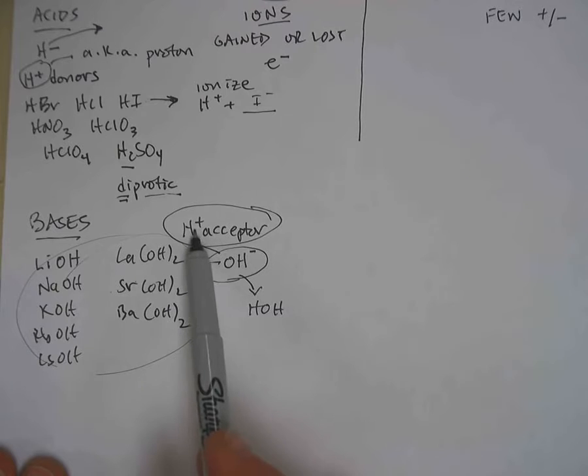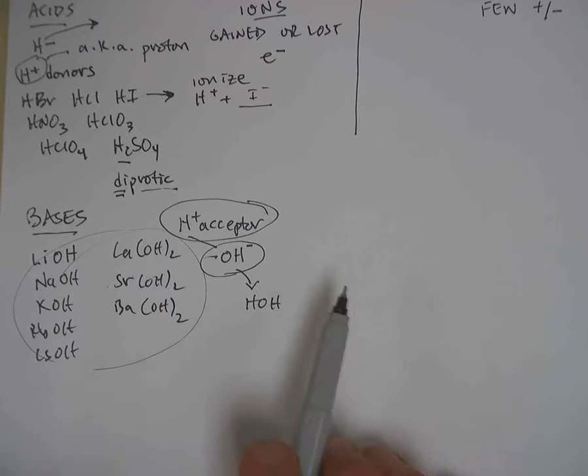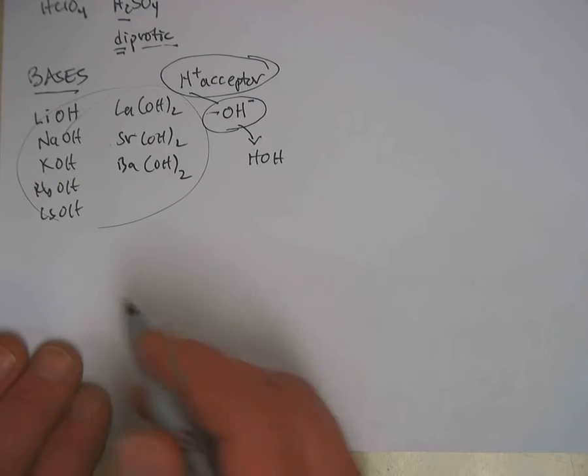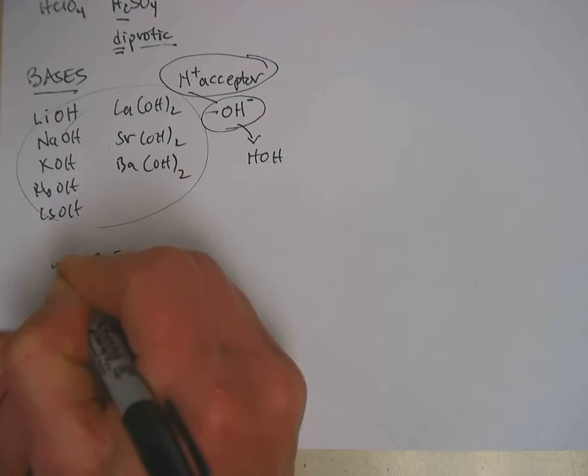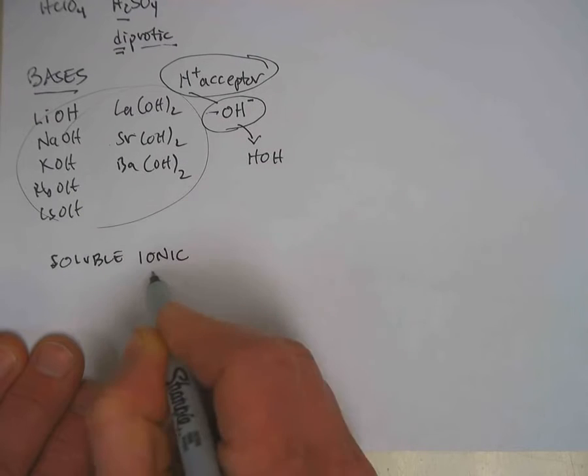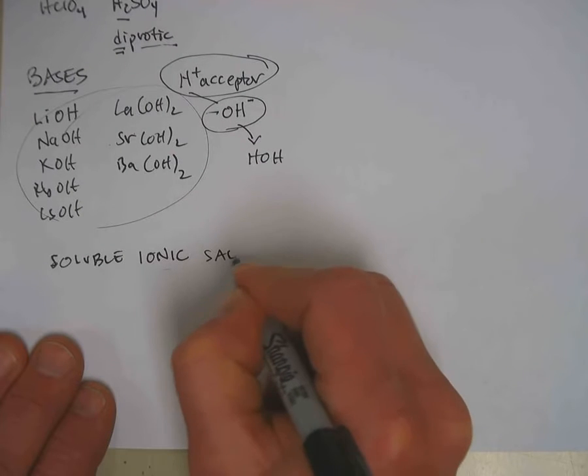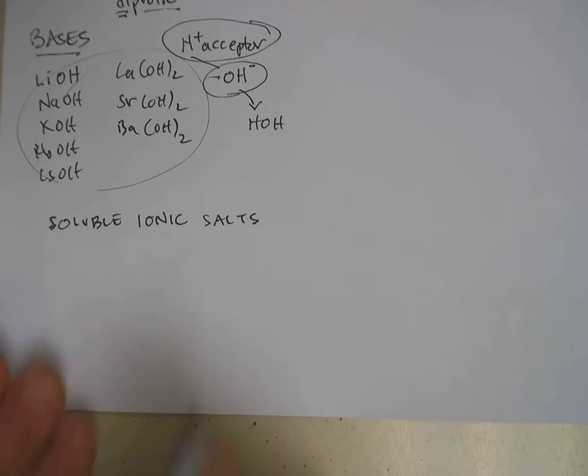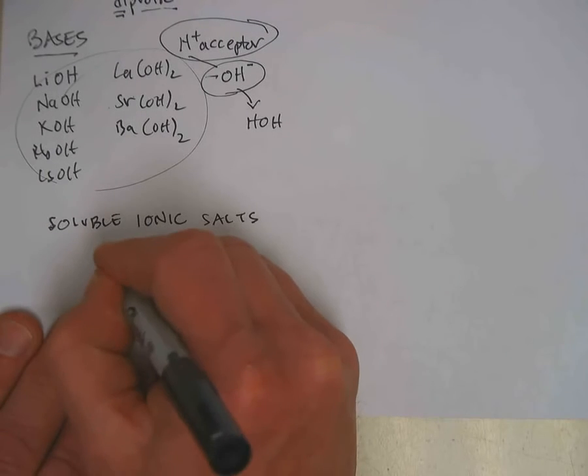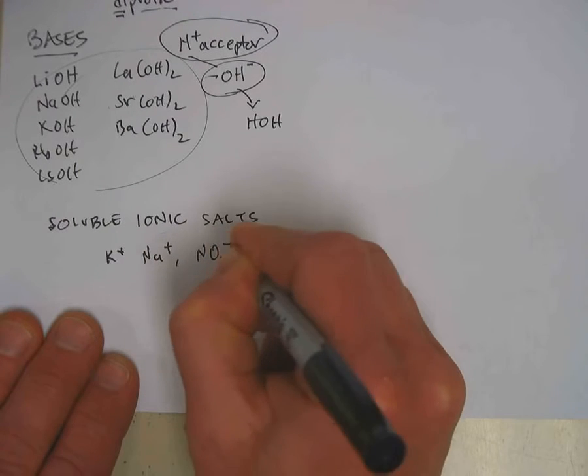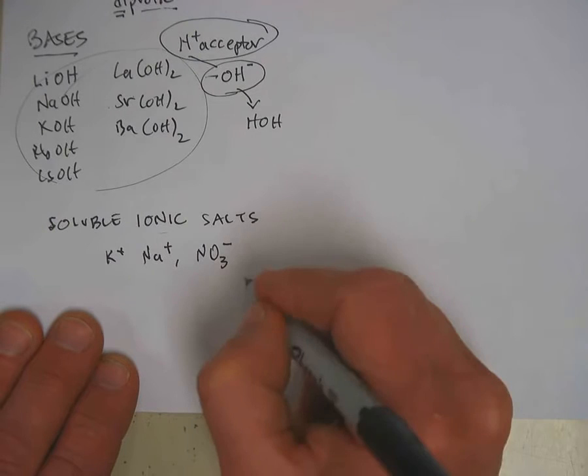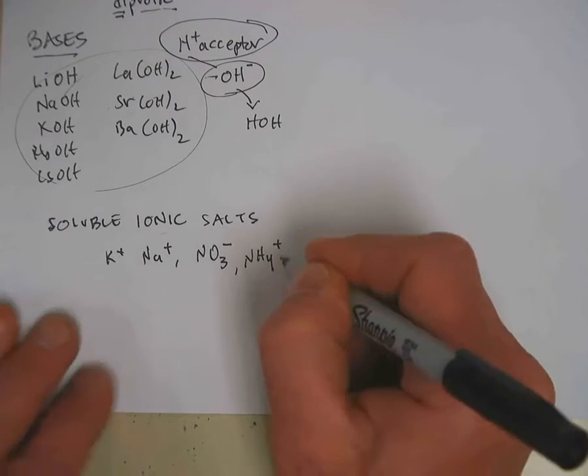The last classification of strong electrolytes are the soluble ion containing, also known as ionic salts. And the soluble ionic salts that you need to know are simply four different things. These four things are anything that contains potassium, sodium, the polyatomic ion nitrate, or the polyatomic ion ammonium.